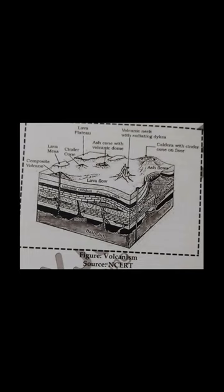Cinder cones: cinder cones are small volcanoes, rarely more than a few hundred meters high. They form from frothy blobs of magma ejected under high pressure from a narrow vent, producing tephra. The tephra accumulates around the vent to form a roughly circular hill with a central crater. Example: Wizard Island, Oregon.